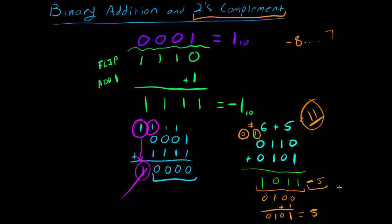To check for an invalid result, compare the final carry bit with the carry bit from the column just before it. If those two bits are different, the answer is invalid and overflowed the available bit range. So 2's complement is great — it makes our circuitry easy and allows addition and subtraction — but we must always verify those last two carry bits to ensure the result is within the valid range.